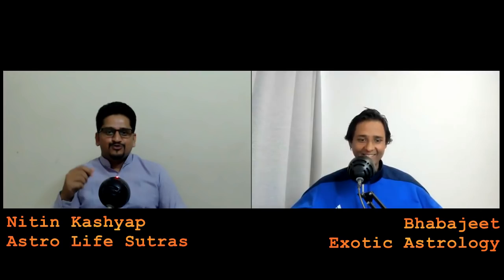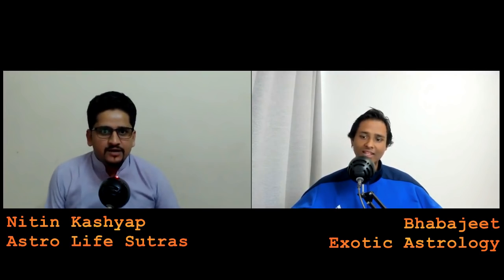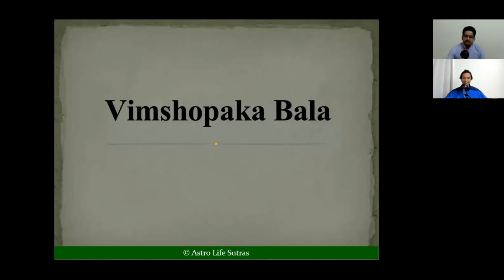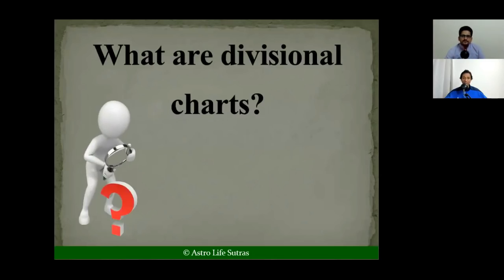Thank you so much for inviting me on your forum. As we promised, today we will discuss how to check planetary strengths in divisional charts. Without any further delay, shall we start the topic? The topic is Vimshopak Bala, and Vimshopak Bala is the tool through which we can examine the strength of a planet in divisional charts — you can say it's a shortcut. But first, we need to understand what divisional charts are.